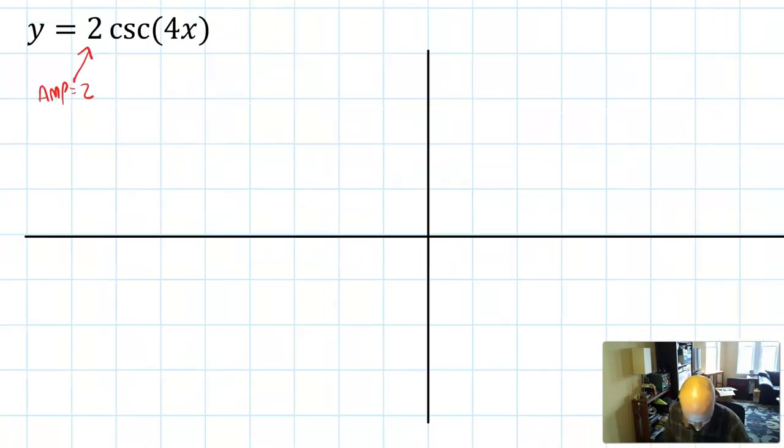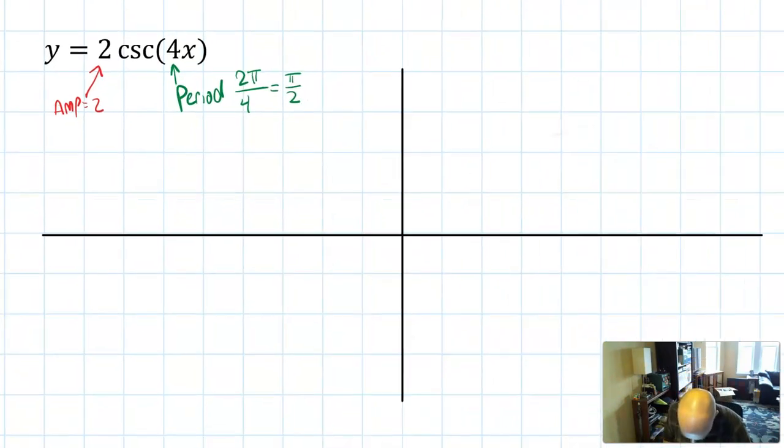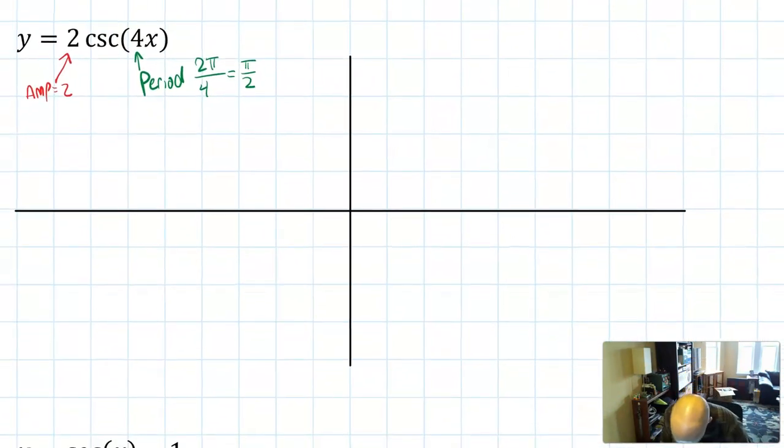So those are our four basic transformations based on the parent graphs. Let's go ahead and do some examples. We're going to graph 2 cosecant of 4x. Right away I can see that the amplitude of the inside function is going to be 2, and I can also see that the period of the whole graph will be 2π divided by 4, which is going to reduce down to π over 2. That's interesting. That's going to be a very short period. So when I scale up my axis I am going to give myself more space than I usually would.